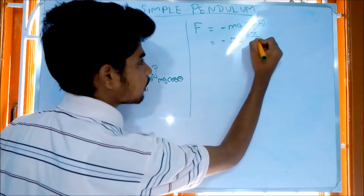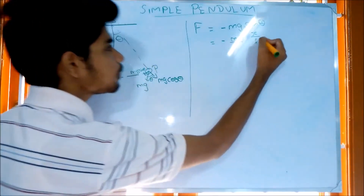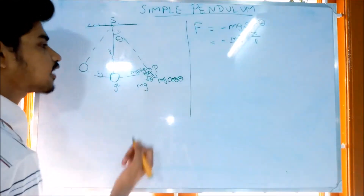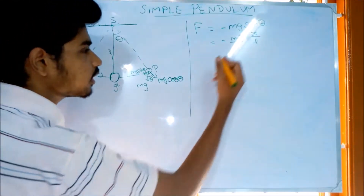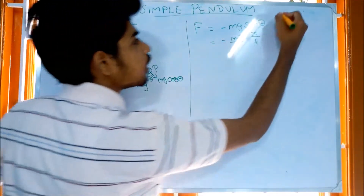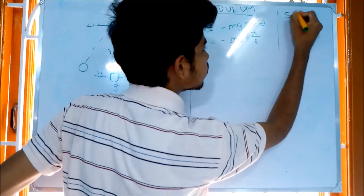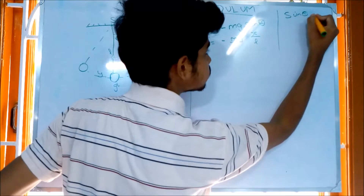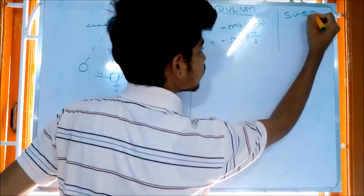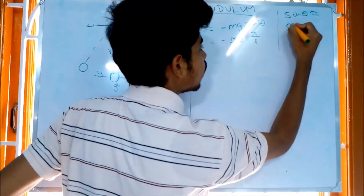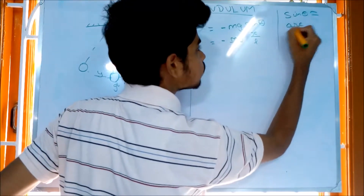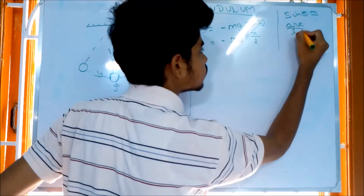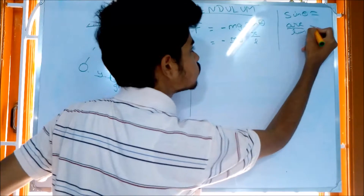So if this path is sin theta, then sin theta equals arc by length — that is x over L.